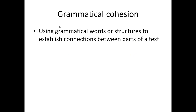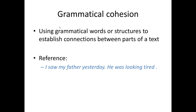Grammatical cohesion involves using grammatical words or structures to establish connections between parts of a text. One way of doing this is by using words which refer to the same thing. Look at: 'I saw my father yesterday. He was looking tired.' What does 'he' mean here? In this case it means 'my father', but we only know this because of the context. The word 'he' gets its reference from the context — in this case from the noun phrase 'my father' in the first sentence. And so we have a tie between the first and second sentences, 'my father' and 'he', which helps the cohesion of the overall text.